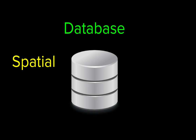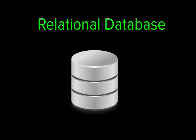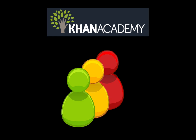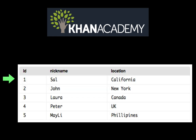Databases come in many forms, but a really popular type of database is called a relational database. It stores each kind of data in a table, which is kind of like storing data in a spreadsheet. A row represents an item, and a column represents properties about that item. For example, to store data about Khan Academy users, we'd have a users table with a row for each user and columns for properties like their nickname and location.